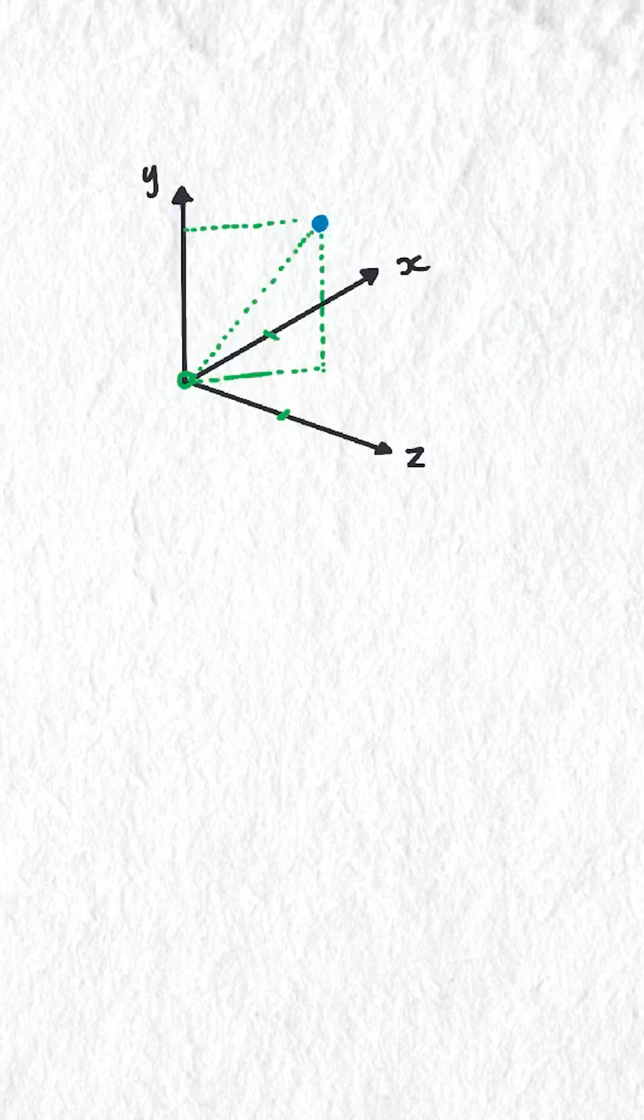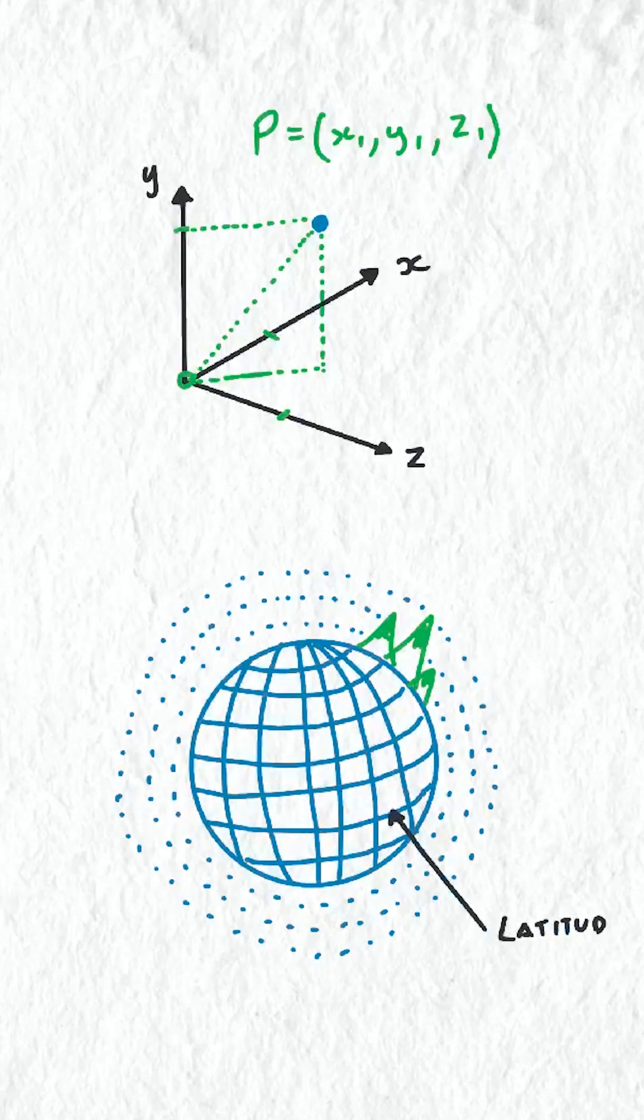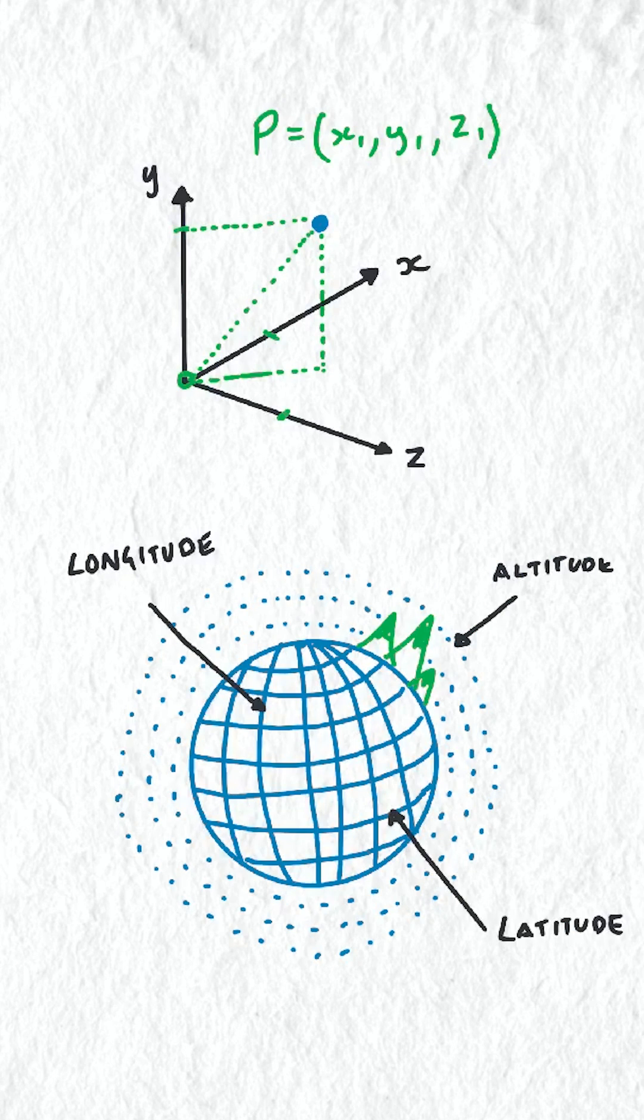We usually use three coordinates to describe a location in space or on a curved surface like Earth. Latitude, longitude and altitude.